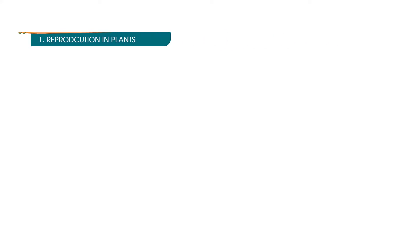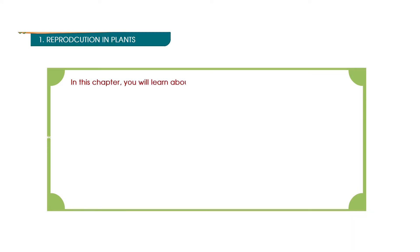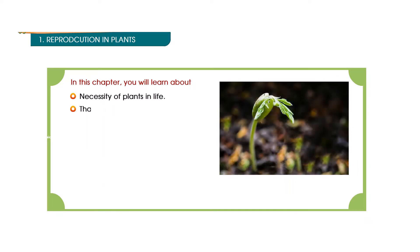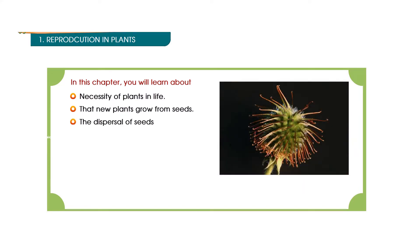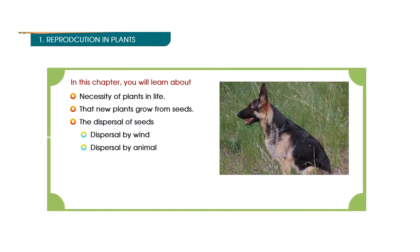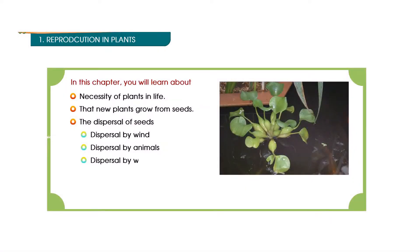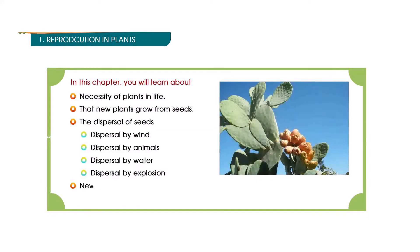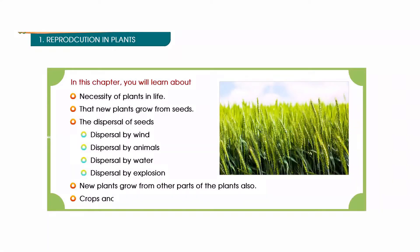Unit 1: Food. Chapter 1: Reproduction in Plants. In this chapter you will learn about the necessity of plants in life, that new plants grow from seeds, the dispersal of seeds — by wind, by animals, by water, and by explosion — new plants growing from other parts of plants, and crops and their protection.